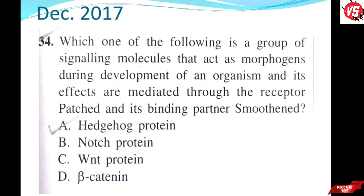The next question is from December 2017, B section: 'Which one of the following is a group of signaling molecules that act as morphogens during development of an organism and whose effects are mediated through the receptor Patched and its binding partner Smoothened?' The answer to this question is the Hedgehog family.